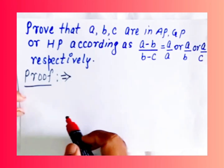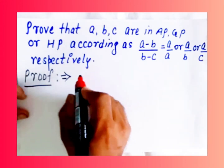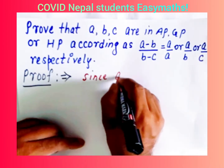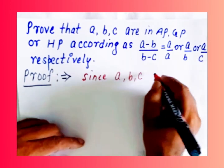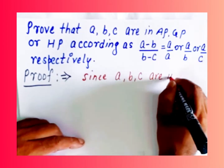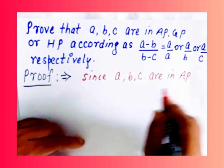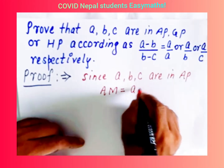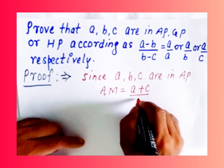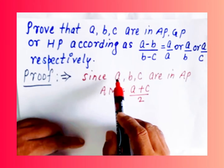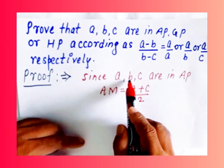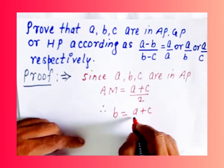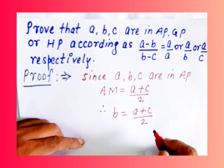First, since A, B, C are in AP, this implies by the arithmetic mean formula that the arithmetic mean is equal to (A plus C) upon 2. If A, B, C are in AP, then B is the arithmetic mean, so we can write B is equal to (A plus C) by 2.